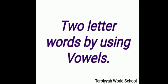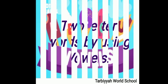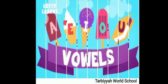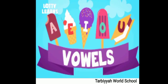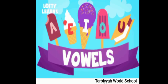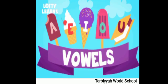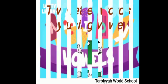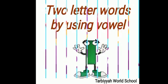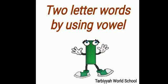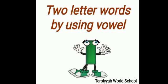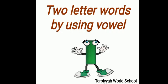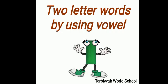So there are five vowels. Let's see what are the vowels: A, E, I, O, U — five vowels. Today we will learn two letter words by using vowel I. What is the sound of vowel I? The sound is 'I'.